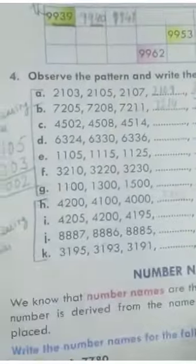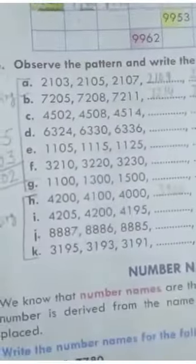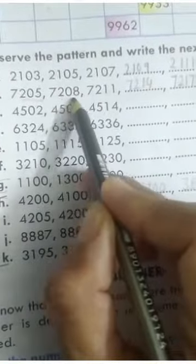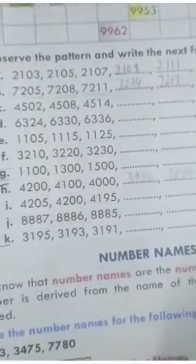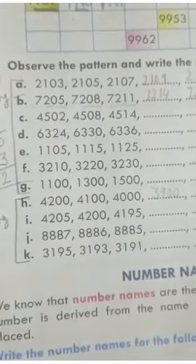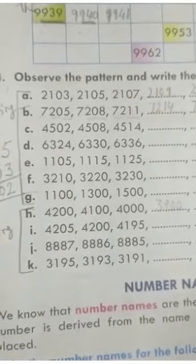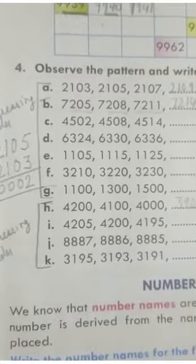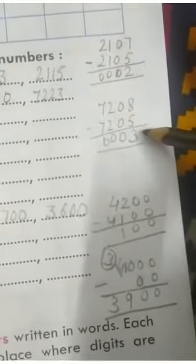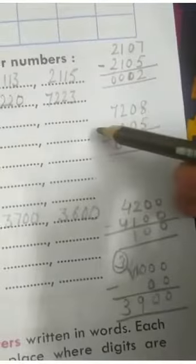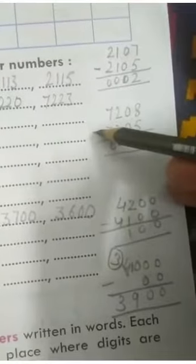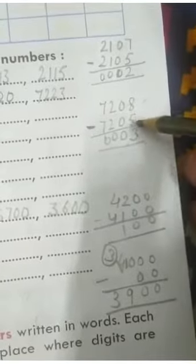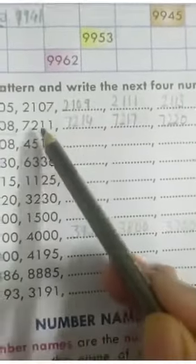Now Part B. Again the numbers are arranged in increasing order: 7205, 7208, 7211. You have to find out if it is skip counting by 2, 3, 5, 10, or 100. Write the bigger number on top and the smaller number below, subtract: 8 minus 5 equals 3. So it is skip counting by 3.